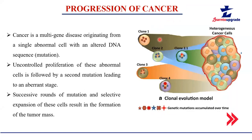This is how cancer progression takes place. If you have one clone of mutation, it starts into clone two, and then other mutations form clone three and clone four. Each clone accumulates further mutations in its DNA, and because of so many mutations accumulating, all these cells together form a heterogeneous cancerous cell.